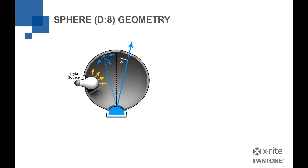Then we have what's called a sphere, or D8. The D means diffuse — there's a light source, like a light bulb, and you'll notice the light bulb cannot shine directly onto the sample. There's a baffle in the way, because the light is shining on the walls of the sphere, which are a very reflective white substance. So the entire sphere turns into a light source — hence the name. The geometry is D8: D for diffuse, and 8 being 8 degrees from perpendicular where the sample port is.